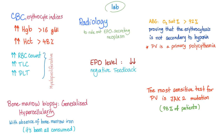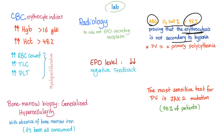To diagnose polycythemia vera: a complete blood count with erythrocyte indices will show hemoglobin more than 16, hematocrit more than 48%, increased red blood cell count, elevated white blood cell count, and elevated platelets. Radiological imaging is performed to rule out EPO-secreting neoplasms such as renal cell carcinoma and hepatocellular carcinoma. Arterial blood gas is done to rule out appropriate EPO increase secondary to hypoxia — in polycythemia vera, oxygen saturation is normal at more than 92%, proving the erythrocytosis is not secondary to hypoxia.